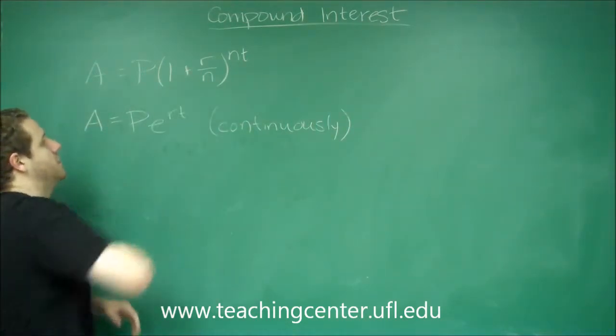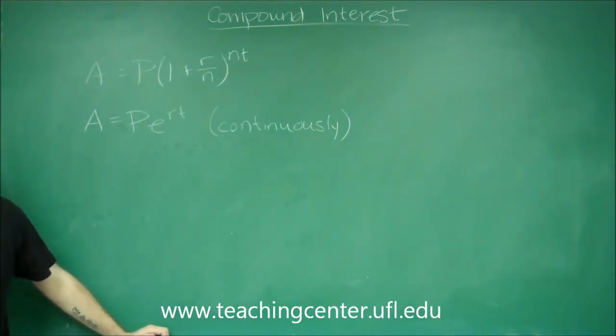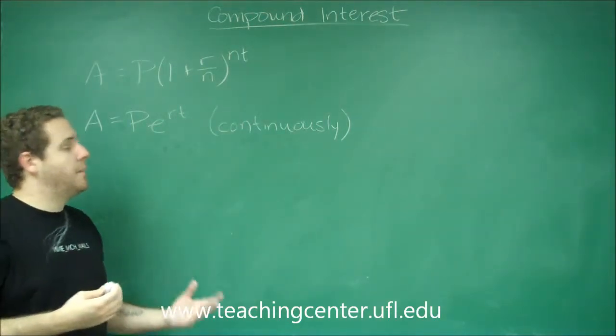In this equation up here, we have N. So N is how many times your interest is compounded per time period. And T is how many time periods.